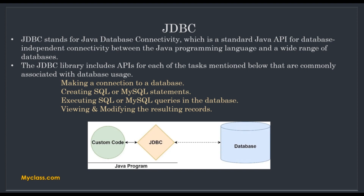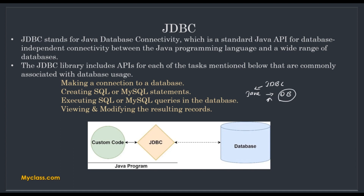What is JDBC? JDBC stands for Java Database Connectivity, which is a standard Java API for database independent connectivity between the Java programming language and a wide range of databases. If we want to connect our Java program to any database in our system, then only we want this JDBC. It is an API, that is application program interface, that helps our Java program to communicate with the database.